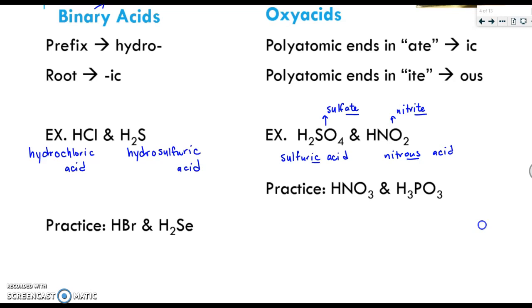At this point, please pause the video and try the four practice problems. Okay, so HBr you should have had as hydrobromic. H2Se, kind of funny, but hydroselenic. On the other side, since NO3 is nitrate, it's nitric acid. And PO3 is phosphite, so it's phosphorous acid.